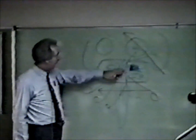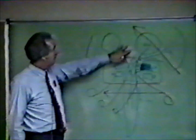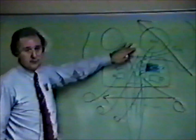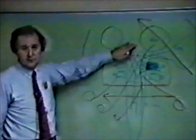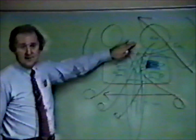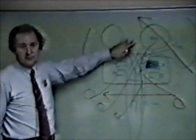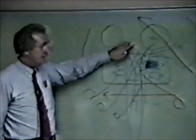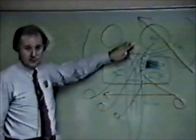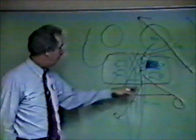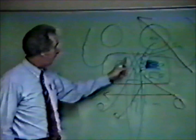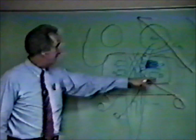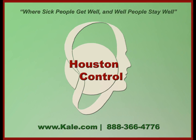This is where our control comes from. We once thought the brain controls us, but we now know it does not, because you can shoot right through it and still go ahead. It stores information and generates energy — it does not control us. This is our control, and we call this, for all practical purposes, Houston Control. This is where it all happens, right here.